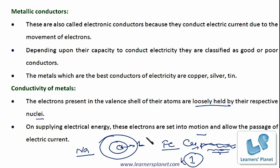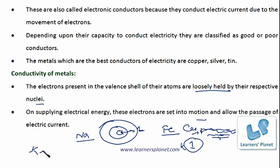If we raise the temperature, the conductivity of metals will decrease. On rising the temperature, the positively charged nuclei — also called kernels — also start moving. They obstruct the movement of electrons under the influence of the applied electric current. Thus, the conductivity of metals decreases on increasing temperature. This is a very important point to remember.